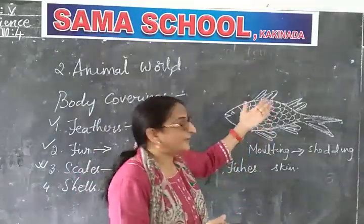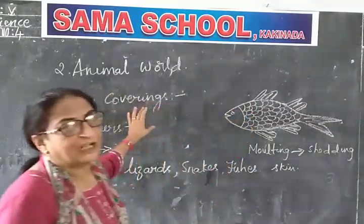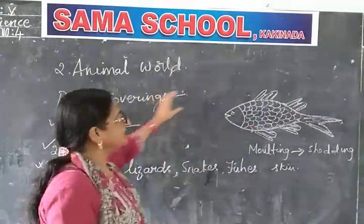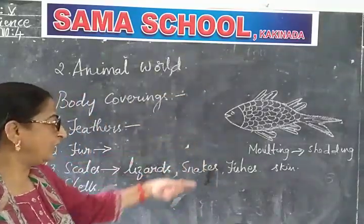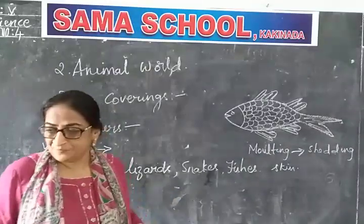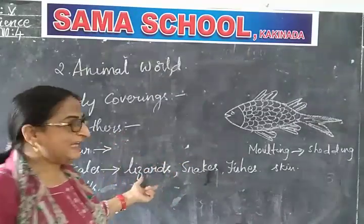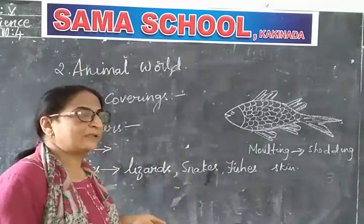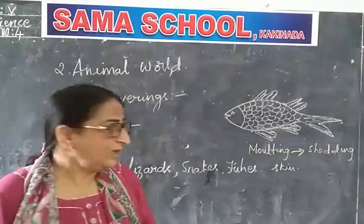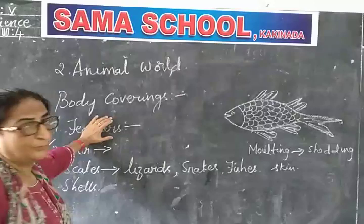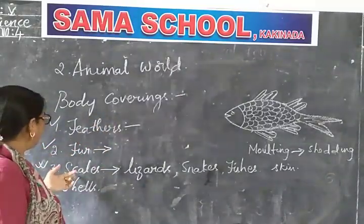So these scales prevent the loss of water from the bodies of all these animals. They are one of the body coverings for aquatic animals, because these animals live in water. We have snakes that live in water also. Lizards live on land, but they too have scales as their body covering, and that prevents the loss of water from their body.